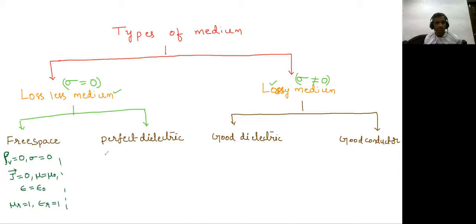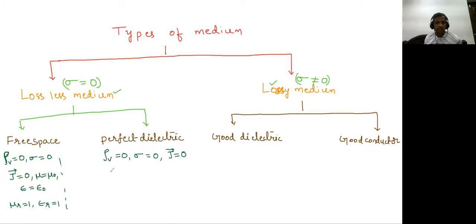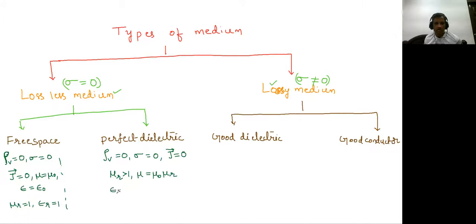For perfect dielectric material, volume charge density rho V is zero and sigma is zero, so J will be zero — same as free space. The only difference is that mu R is greater than one, so you must consider mu equal to mu naught times mu R. Similarly, epsilon R is greater than one, giving epsilon equal to epsilon naught times epsilon R.